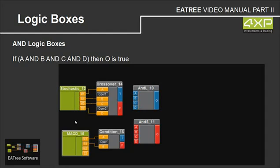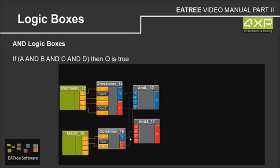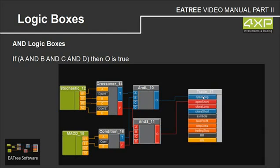Here we have a stochastics crossover example and a MACD example. If this crossover becomes true, we connect it to A of AND long. And if MACD becomes true, we connect it to B. C and D are not connected, so they are true by default. So if both A and B are true — both have to be true, not only one of them — then O is true and we connect it, for example, to open a long position. So a long position will be opened when we have a true value from both conditions.